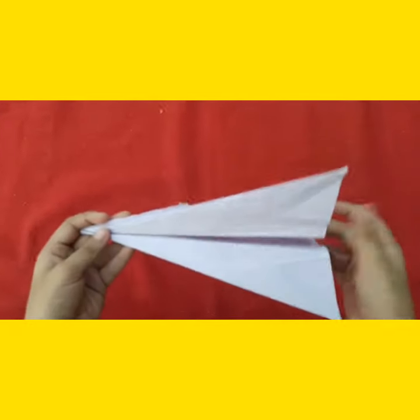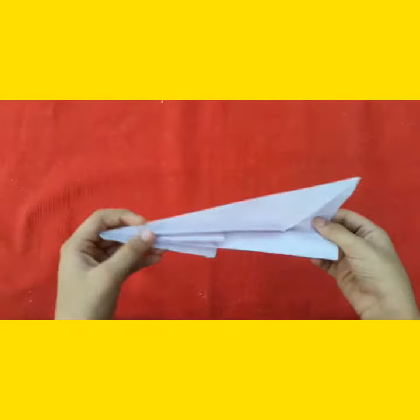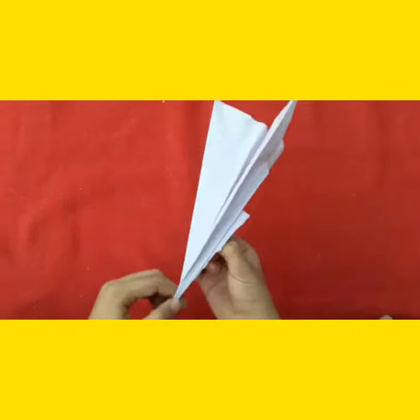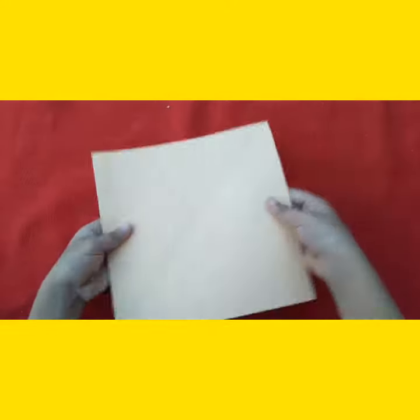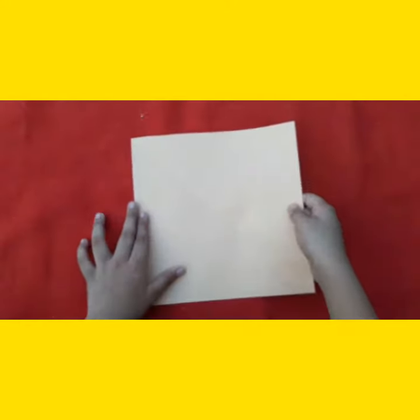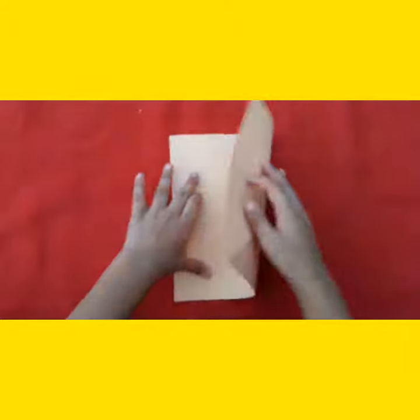Hello friends, welcome to my channel. Today we are going to see how to make a paper origami rocket. Now let's see how to make it. For that we need one square paper. Fold this paper into half.